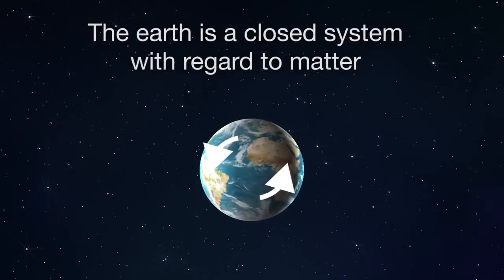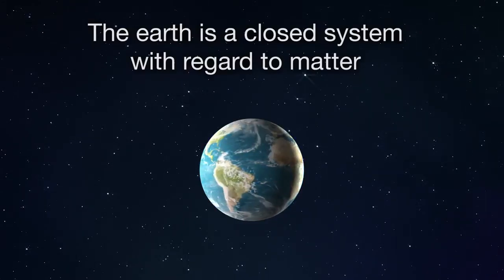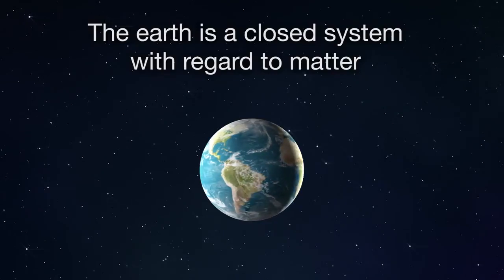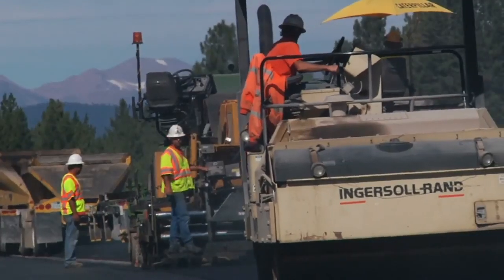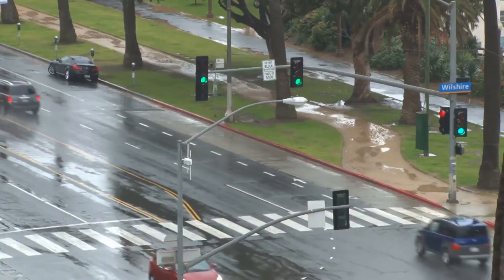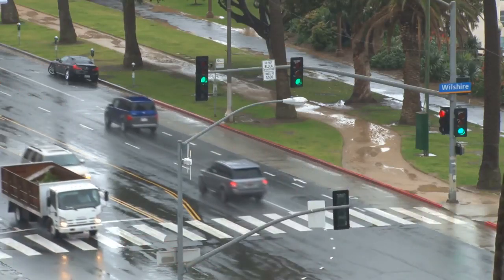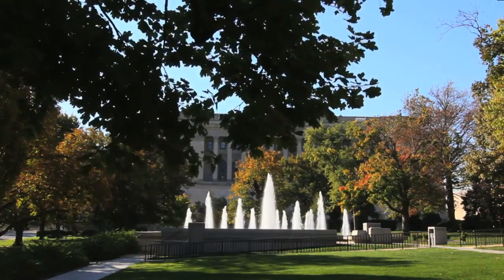The Earth is a closed system with regards to matter, so water never leaves it. However, human activities can alter the hydrologic cycle and water availability. When we pave land over for a road, we impede the flow of water into the soil, increasing runoff or evaporation. When we water our lawns or use water for pools and fountains, we increase evaporation. When we remove vegetation, we decrease transpiration. All of these actions affect the hydrologic cycle.